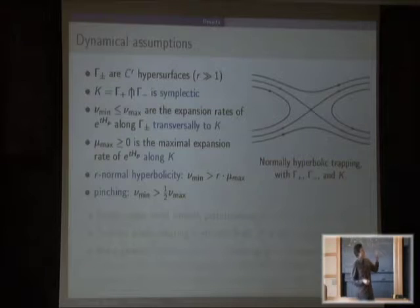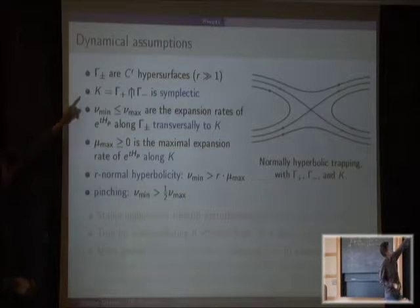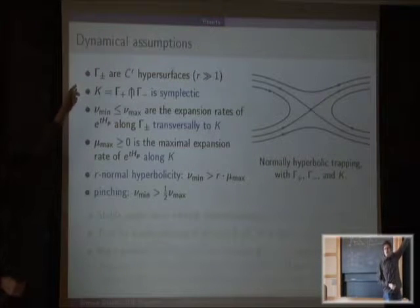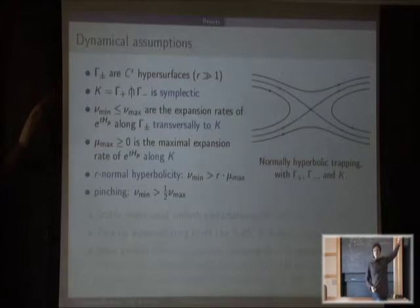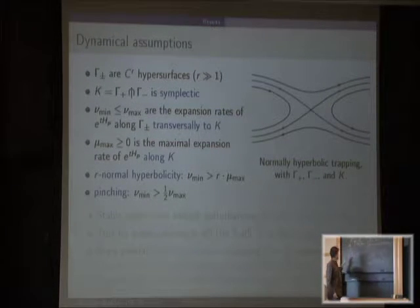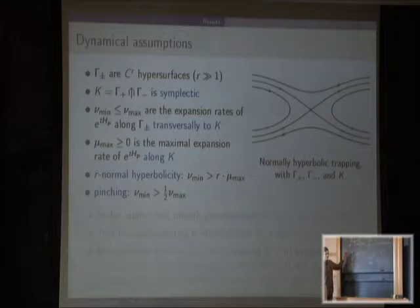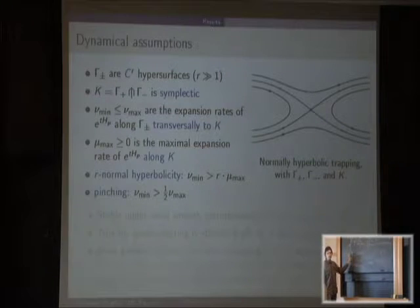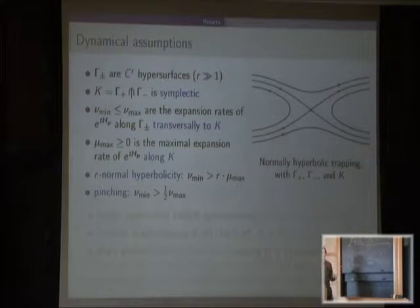Now I formulate the assumptions. The first assumption — which already excludes many interesting hyperbolic situations — is that the incoming and outgoing tails are smooth manifolds. In many other very interesting situations, these things are fractal and don't even have an integer Hausdorff dimension. But in my particular situation they are smooth, and that recovers some interesting structure.